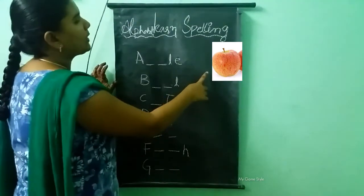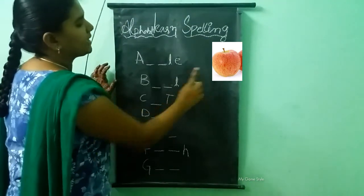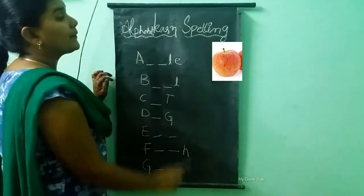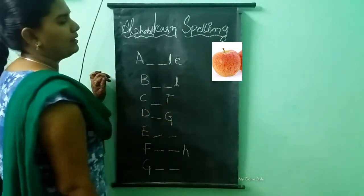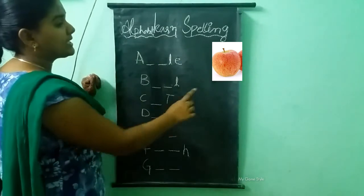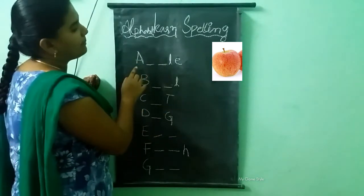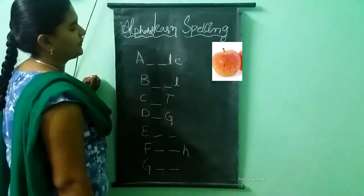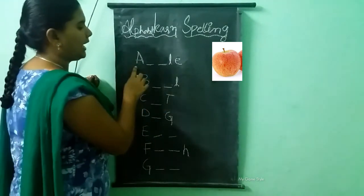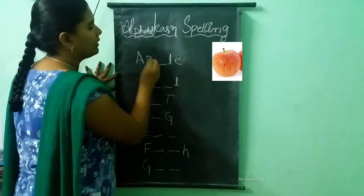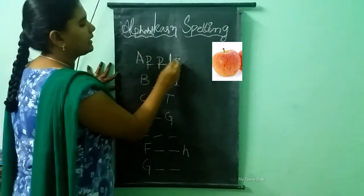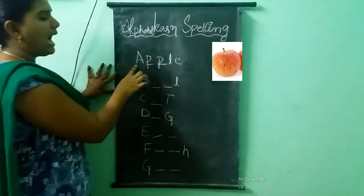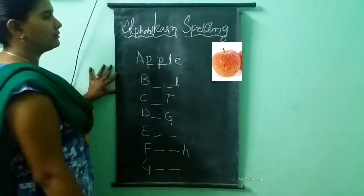What picture is this? This is an apple. What is the spelling of apple? A-P-P-L-E. Apple.